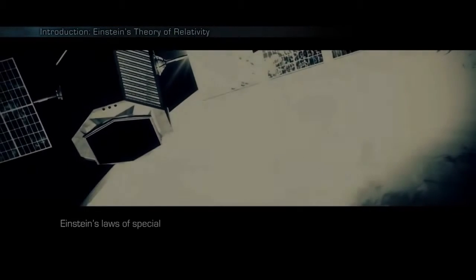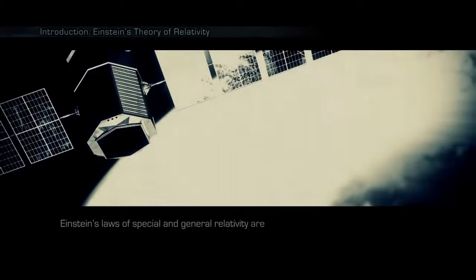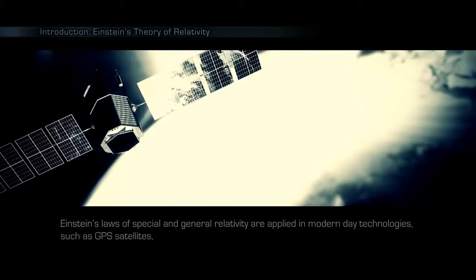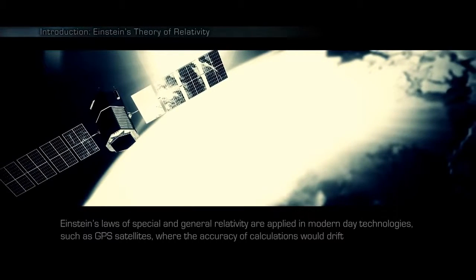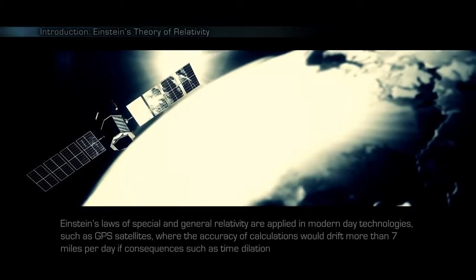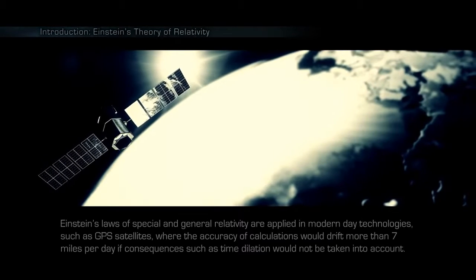Einstein's laws of special and general relativity are applied in modern-day technologies, such as GPS satellites, where the accuracy of calculations would drift more than 7 miles a day if consequences such as time dilation would not be taken into account.